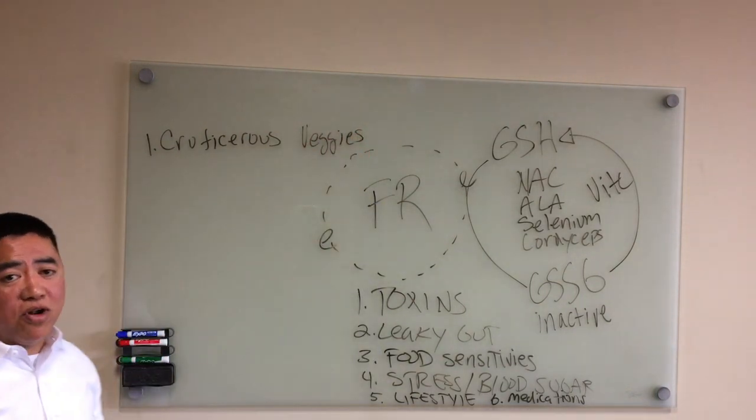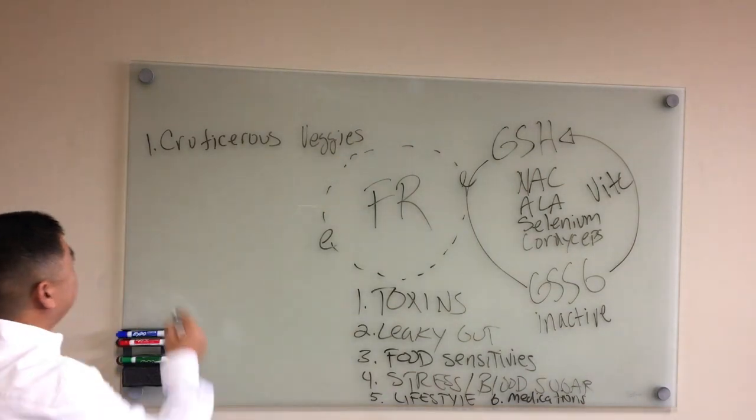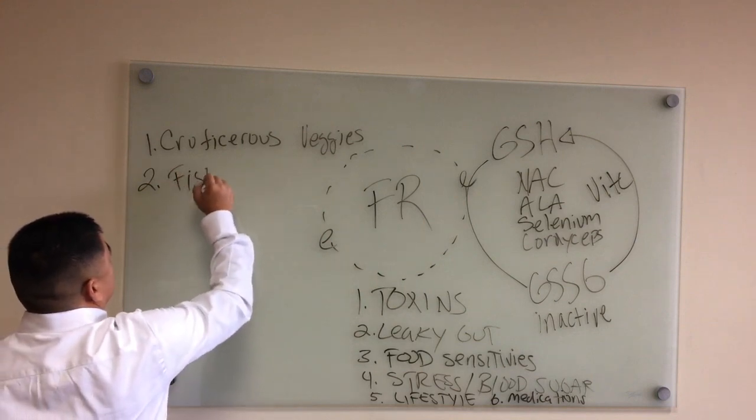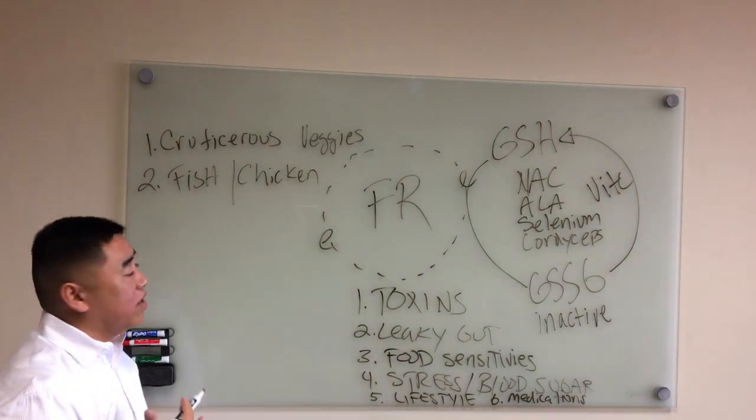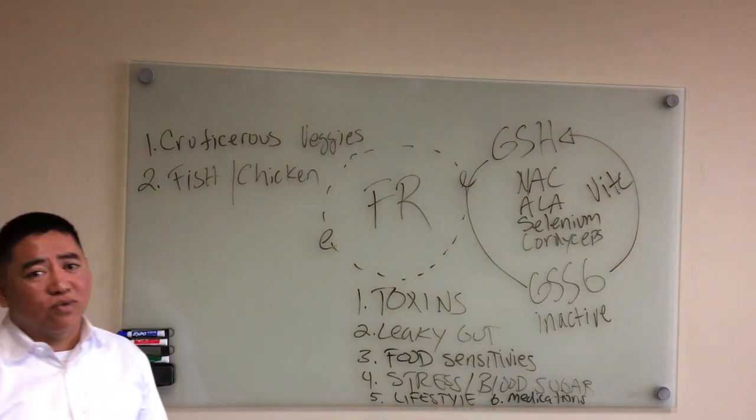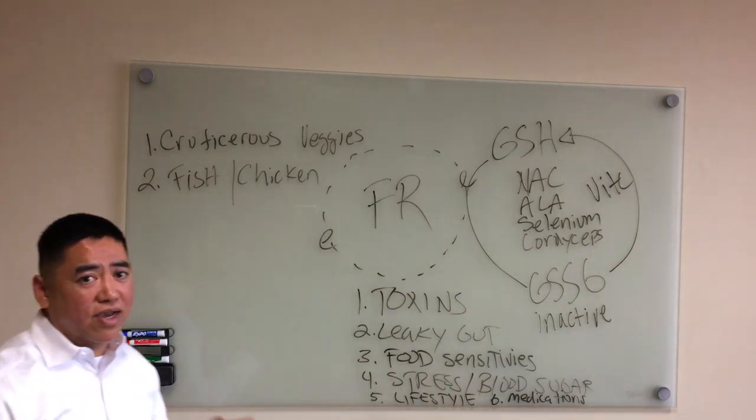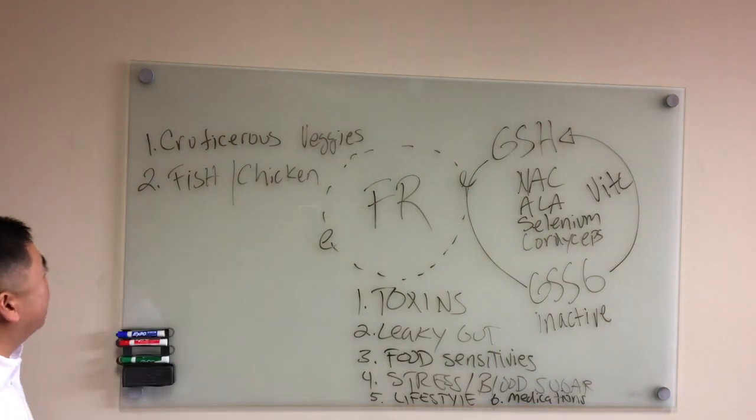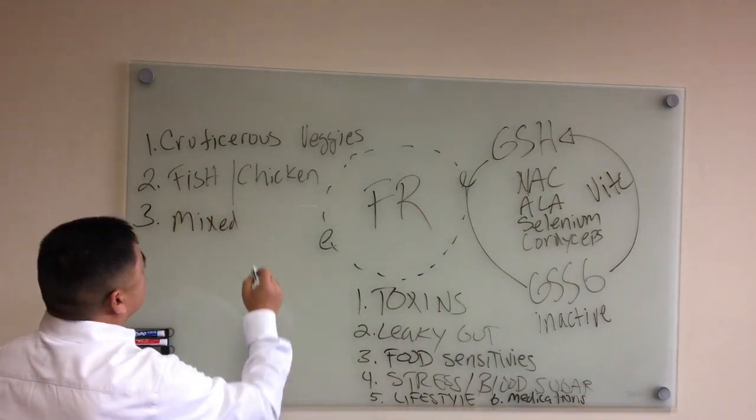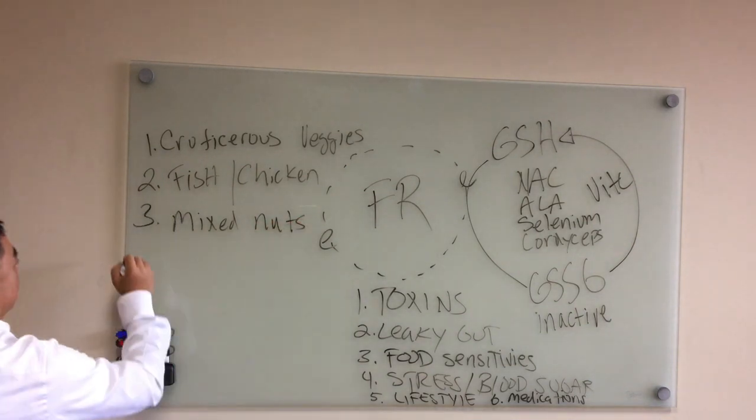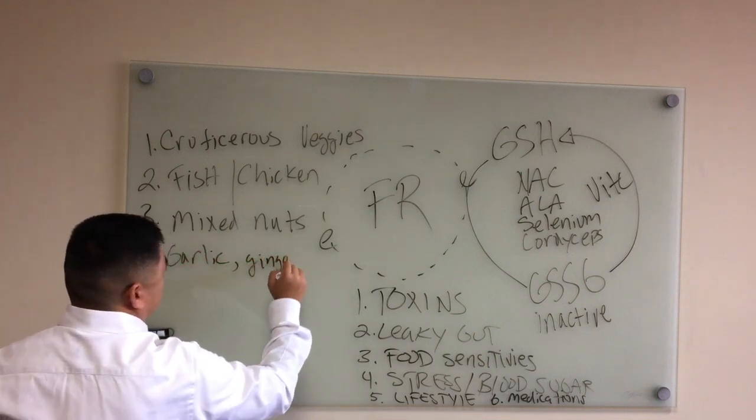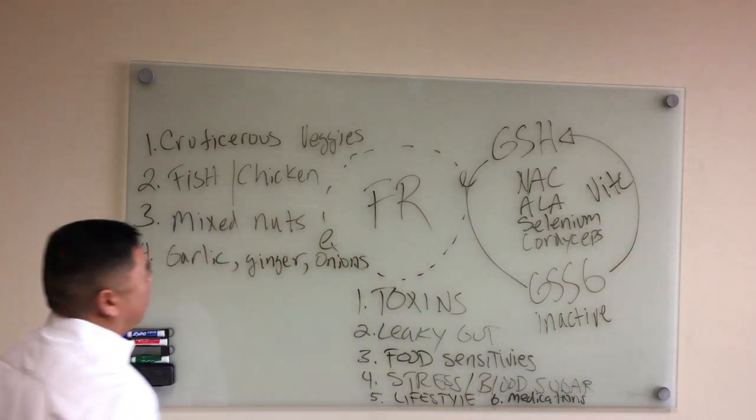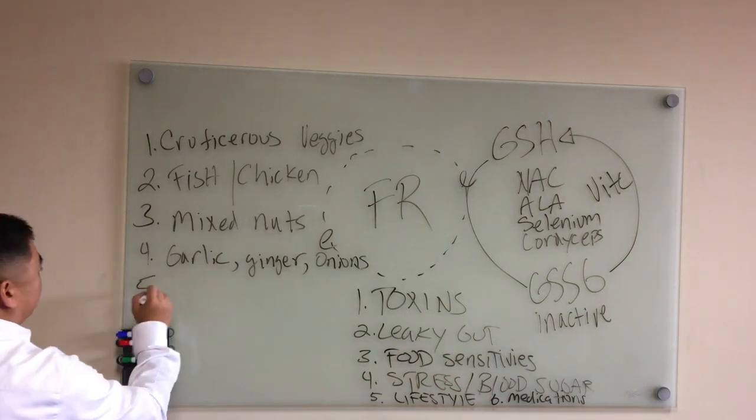Number two, fish and chicken. Obviously you want to make sure you're eating wild-caught fish or organic chicken. You don't want any of the steroids and antibiotics or whatever it is that they feed the chickens with. Number three, mixed nuts - your walnuts, your almonds. Number four, garlic, ginger, onions.